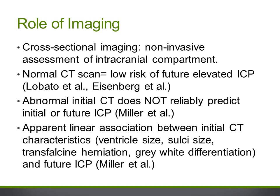On the other hand, an abnormal initial CT scan is not as good a predictor of concurrent or future ICP elevation. Miller et al. showed in a paper in the Journal of Trauma in 2004 that only slightly more than half — 53 to 63 percent — of patients with abnormal initial CT scans went on to develop intracranial hypertension. Despite the inability for an abnormal scan to predict initial or future ICP, these authors did document a statistical trend towards a linear association between initial CT characteristics — namely ventricular size, sulcal size, transfalcine herniation, and gray and white matter differentiation — and the degree of future ICP elevation. This study also confirmed that an important minority of patients with normal initial CT scan do go on to develop intracranial hypertension, and suggested follow-up imaging be done for such patients, especially given that one-third of patients have evolving intracranial injuries.